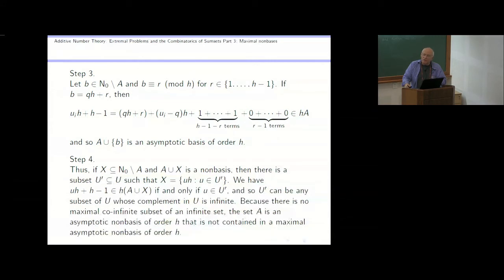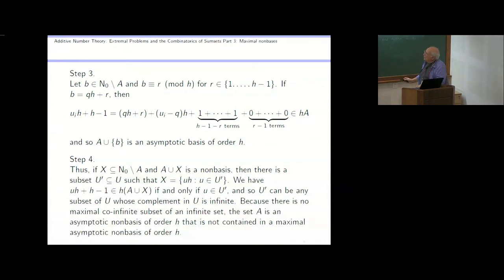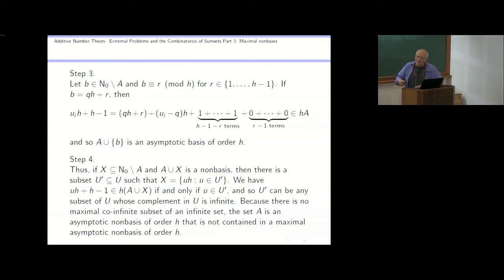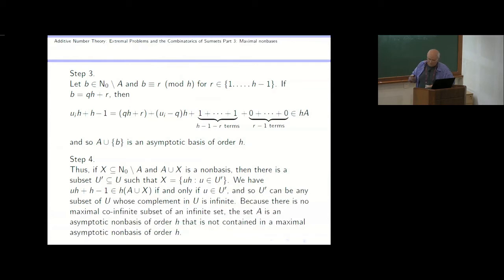If you take a set U prime, you can add u times h for u in U prime, so long as there are infinitely many elements of U that you haven't added. That is, you can add any set of these multiples of h whose complement in U is infinite. There's a simple fact that if a set has infinite complement and you add an element to it, its complement is still infinite. So there's no maximal set whose complement is infinite — there's no maximal set of these multiples of h that you can add to a to get a maximal non-basis. So this is a set which is an asymptotic non-basis of order h and not contained in a maximal non-basis.